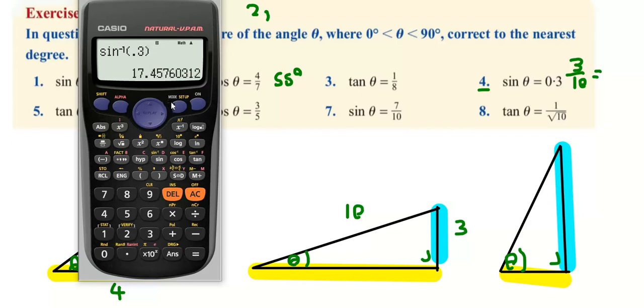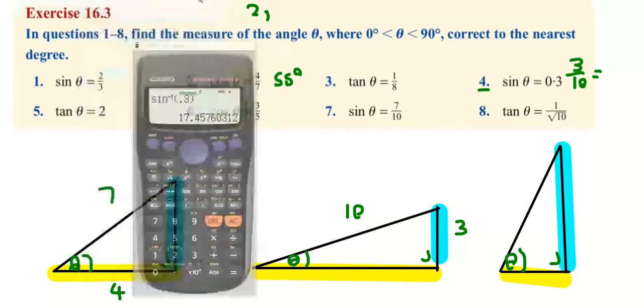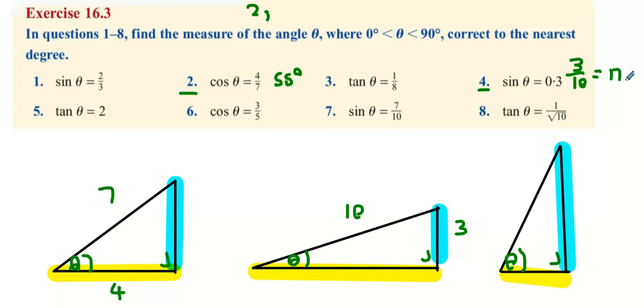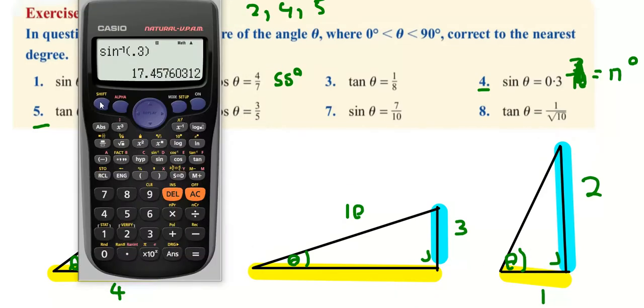As you get a bit further down, we can look at question 5, which is tan equals 2. That means 2 over 1—it means the opposite is 2 centimeters long for every 1, so I'm expecting this to be quite a steep angle actually. As it turns out, I'm going to tan inverse 2, and what do I get? 63 degrees, which is quite a sizable angle.